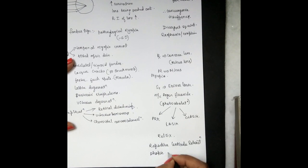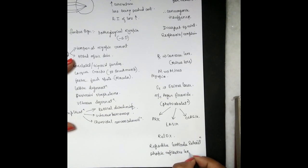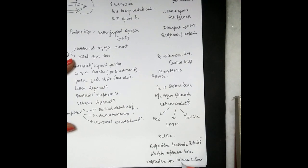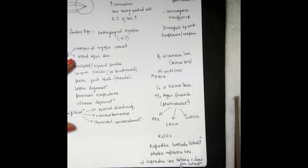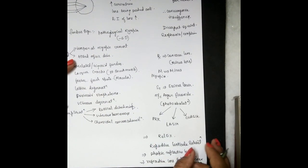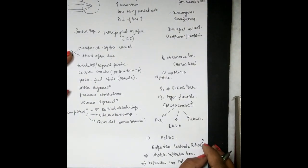Another method is phakic refractive lens — the patient's natural lens is present and we place an additional refractive lens to correct myopia. There is also refractive lens exchange with clear lens extraction, where we remove the patient's clear natural lens and insert another refractive lens. ReLEx involves refractive lenticule extraction. This is all about myopia — thank you friends, hope this video helps you. Keep studying, keep learning!